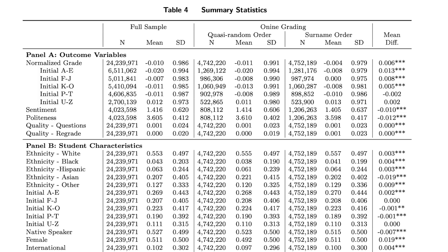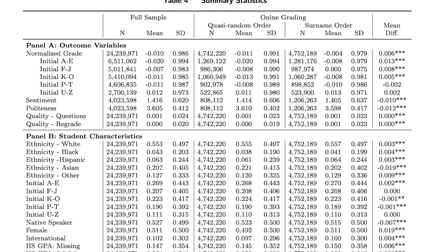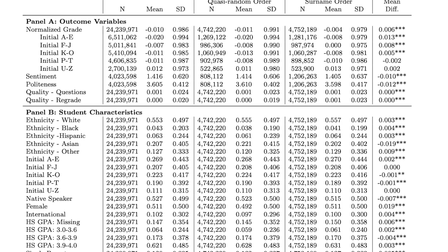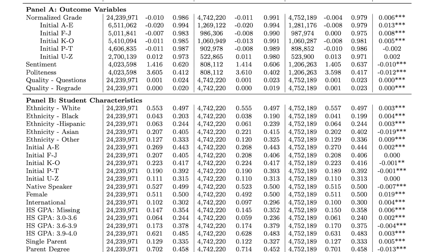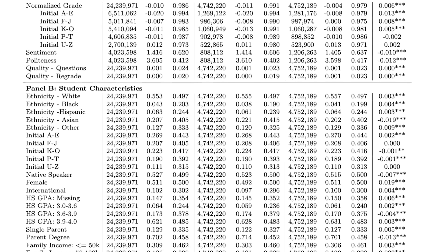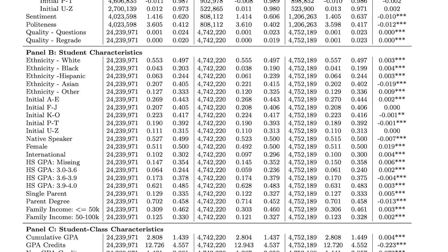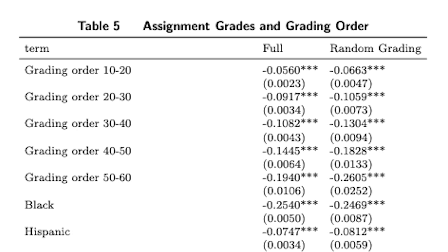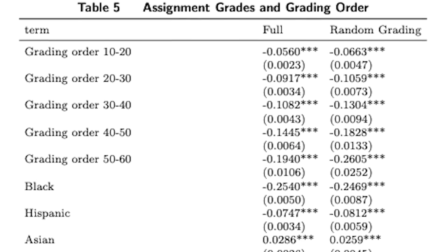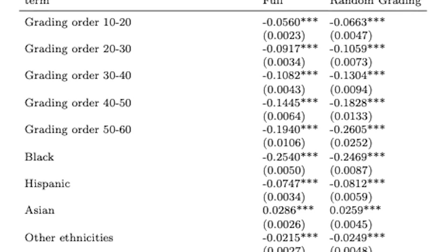What we find is that interestingly, students starting with initials A, B, C, D, E receive 0.3 higher grades when they are graded sequentially compared to being graded randomly. And for students with later initials like W, Y, Z, they receive 0.3 lower grades compared to what they deserve under the random situation.